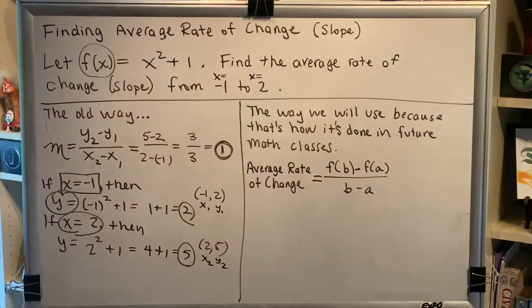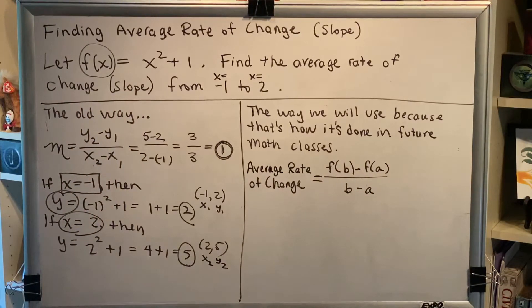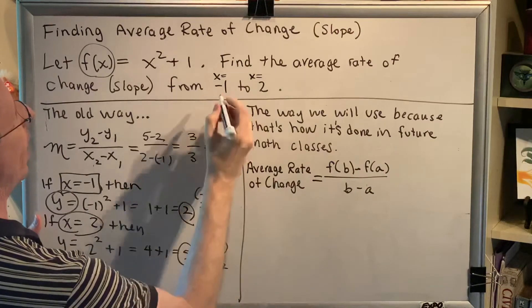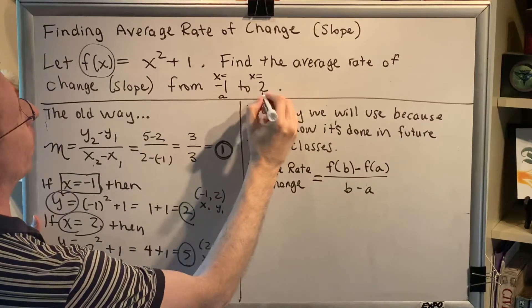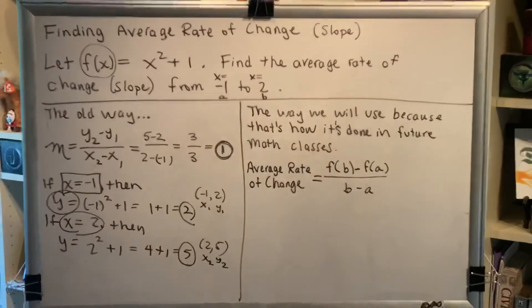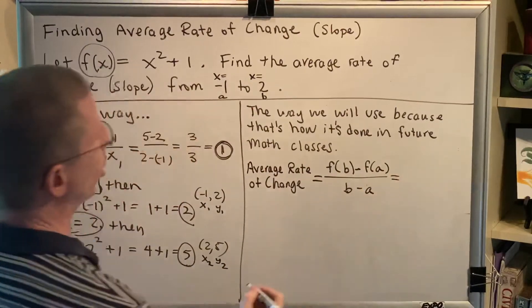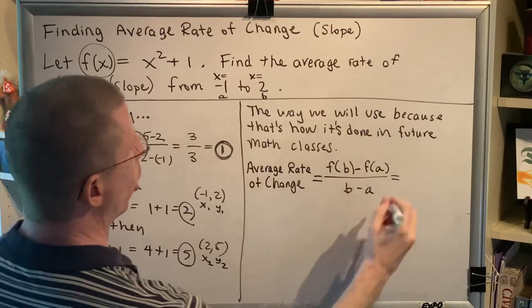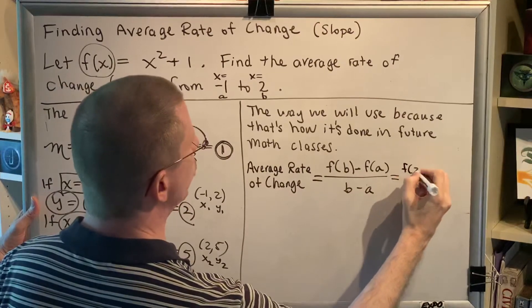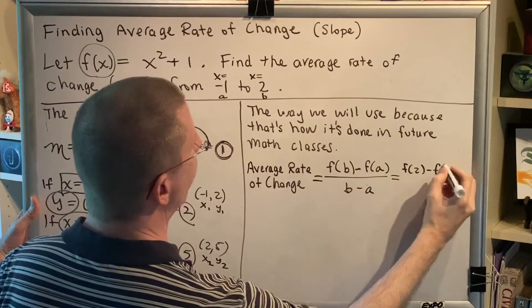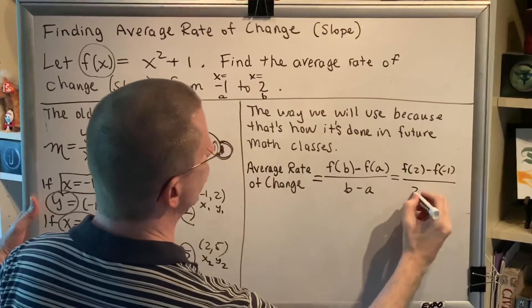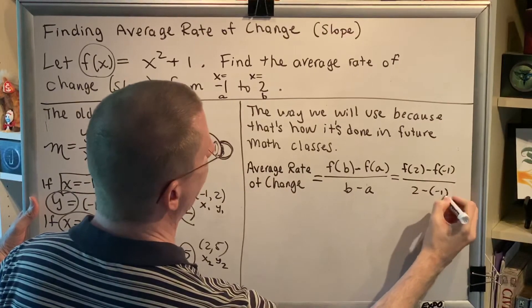And one of the things that you need to get from the diagram that was shown in another video is that the smaller x value is a and the larger x value is b. So when we plug in the a and the b that we're given in this particular problem, we're going to get f of 2 minus f of negative 1 over 2 minus negative 1.